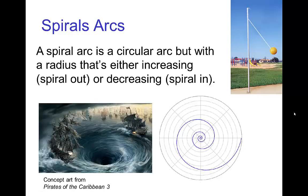A much less common type of path of action is a spiral arc. A spiral arc would be basically a circular arc, but with a radius that's changing as the object spirals in or spirals out.